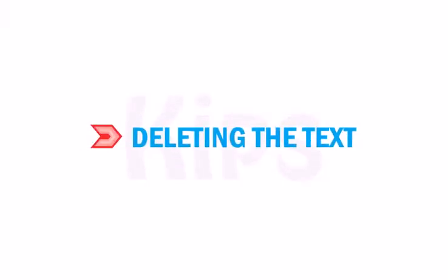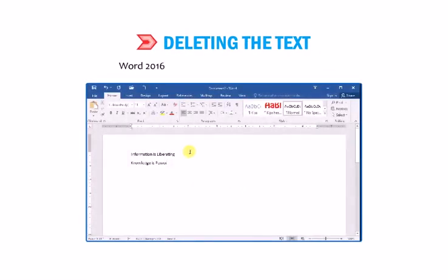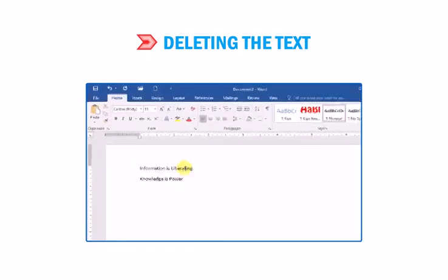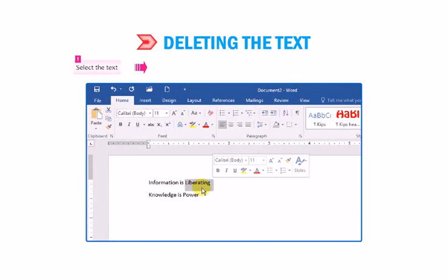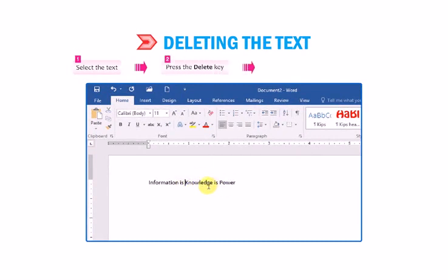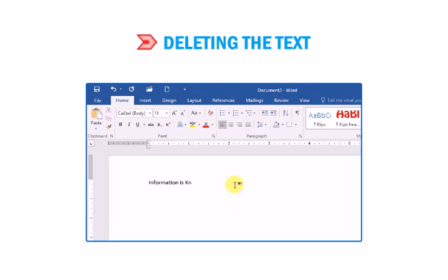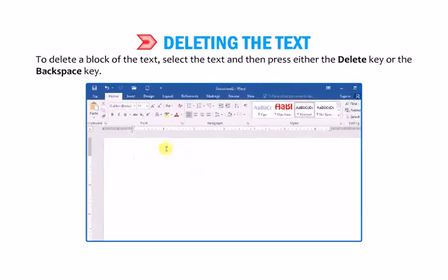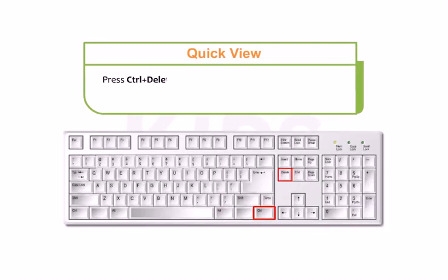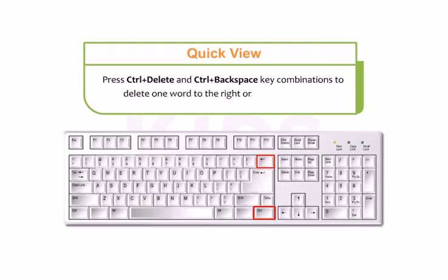Let us talk about deleting text. Word 2016 provides a facility to erase the text. Follow these steps: 1. Select the text. 2. Press the Delete key. 3. The selected text will be removed. You can also delete text using the Backspace key, which removes the character to the left of the cursor position. To delete a block of text, select it and press either the Delete key or the Backspace key. Press Ctrl+Delete or Ctrl+Backspace to delete one word to the right or left respectively.